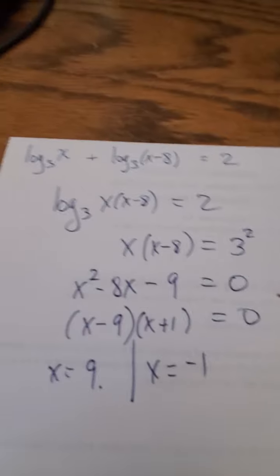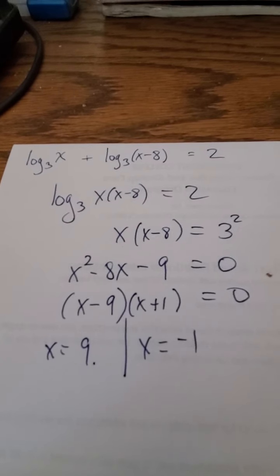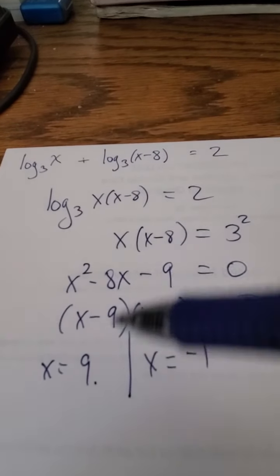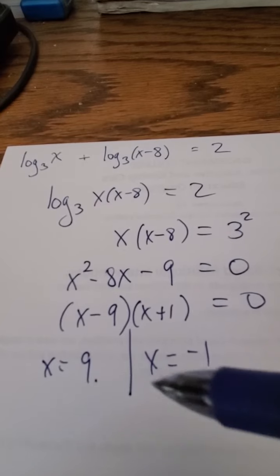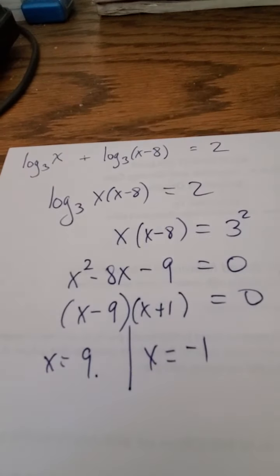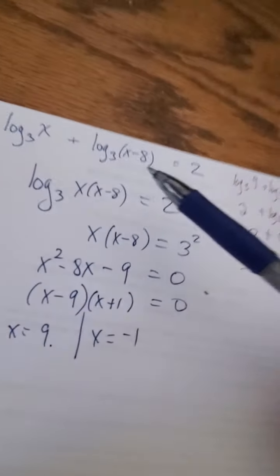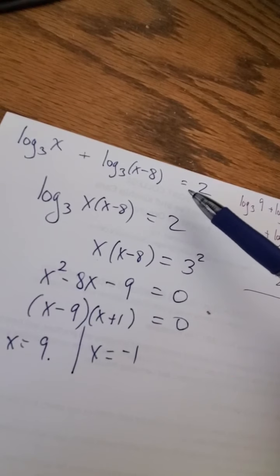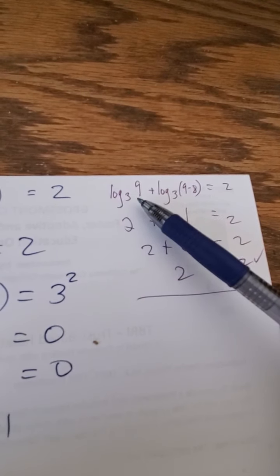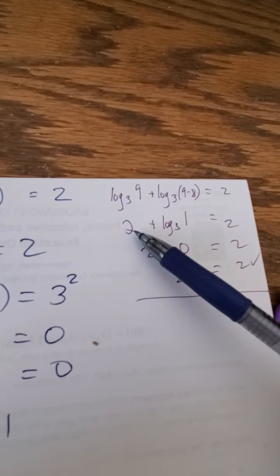However, I need to check both solutions because in a log problem, sometimes a solution, even if usually we always used to say check your answer because maybe you made a mistake, but here even if you didn't make a mistake, you have to check the answer because it's possible that an answer you get at the end may not fit into the original problem. So let's check them both. When I plug in x equals 9, I get log into the original equation. I plug in x equals 9, I get the log base 3 of 9 plus log base 3 of 9 minus 8.